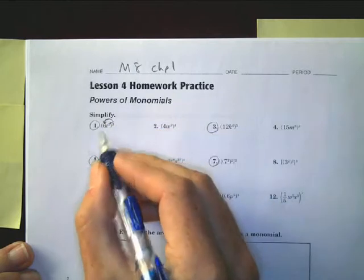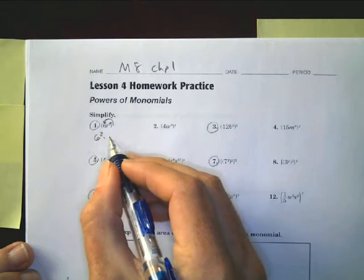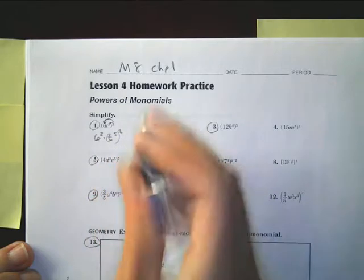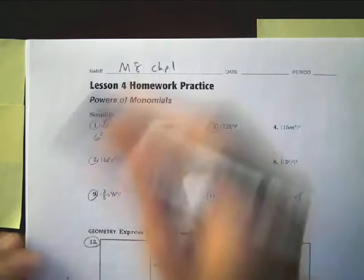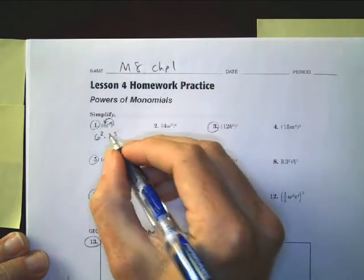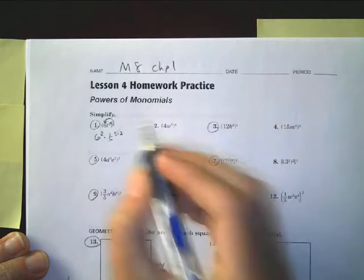So first of all, 6 squared, I'm going to rewrite it here. 6 squared would be written like this, and t to the 5th is still squared as such. But I could look at this as really being t times t to the, sorry, 5 times 2 power as such.